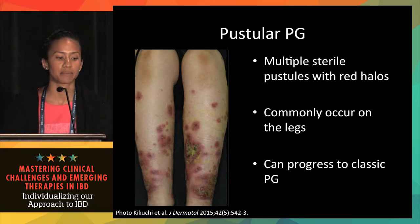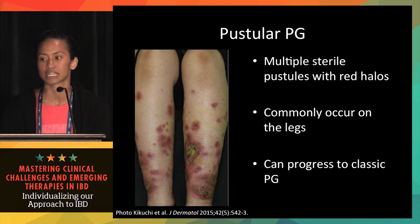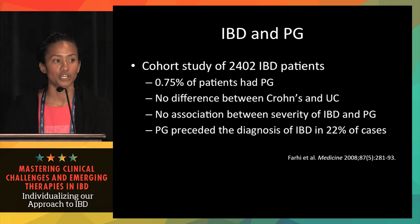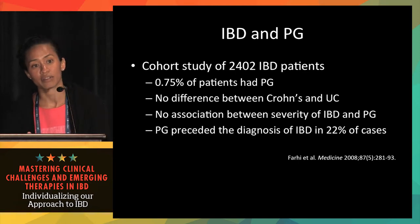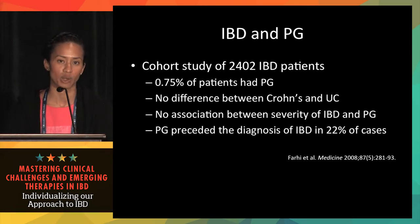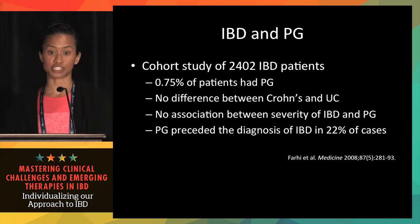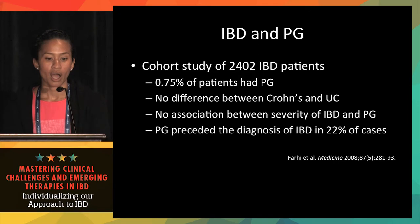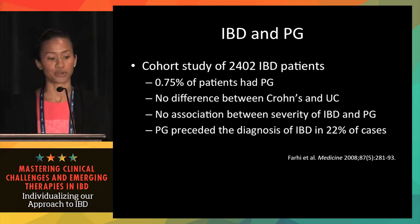Pustular PG occurs most commonly on the legs as sterile pustules surrounded by a red halo and can progress to the classic form. In a cohort study of 2,402 IBD patients, PG was found in less than 1% of patients. There was no difference between ulcerative colitis and Crohn's disease in prevalence, no association with IBD severity, and the two diseases don't usually follow a parallel course. Interestingly, 22% of PG cases preceded the IBD diagnosis — so in dermatology we often refer to GI for evaluation of subclinical IBD.